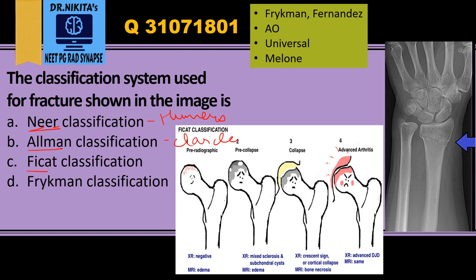To summarize: Allman is for clavicle, Ficat is for femur avascular necrosis, and Frykman (FORM) is for distal radius. These are some of the important, frequently asked classification systems for fractures.